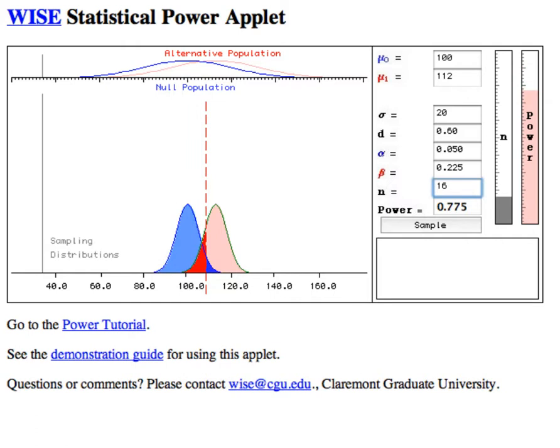Let me reset this to 16. Another way we can increase power is by merely increasing our alpha, which has the effect of moving this cutoff threshold to the left. As we do that, that is going to make more of this alternative distribution lie to the right of the cutoff, which will increase power. Which again, we see is what happens.